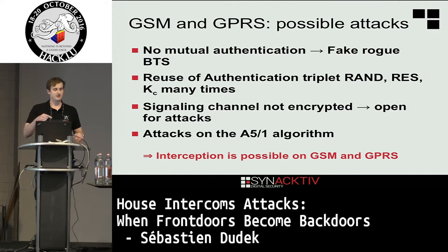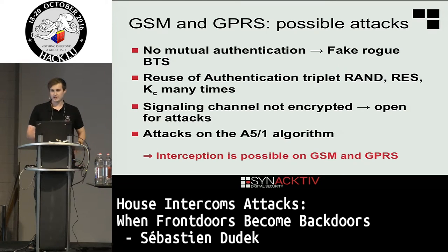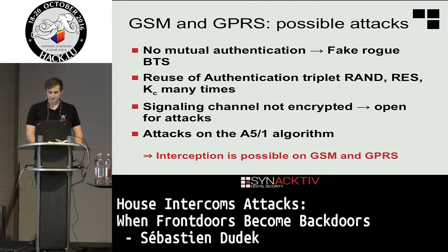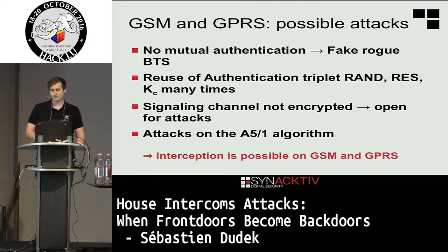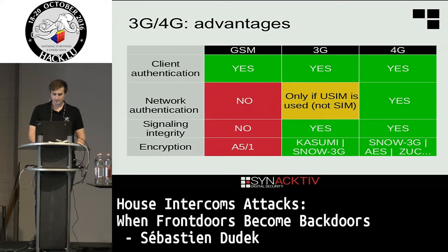To summarize: with GSM and GPRS, interception is possible, we can create fake rogue BTS, and we can break conversations by reusing authentication triplets. Also, the signaling channel is not encrypted, so if SMS commands are sent by the intercom, you can intercept them. Mobile phones can choose to allocate a traffic channel for SMS, but often they use the signaling channel because it's simpler.